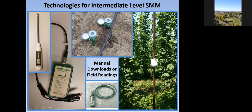Another common type is the Irrometer tensiometer. You fill these with fluid, put a vacuum on them with a vacuum pump, and bury them in the ground to the depth you want to monitor. If you want to look at a 12-inch root zone, you set the probe tip down at that 12-inch zone. As the soil dries out it pulls more of a vacuum; as it gets wet again, that vacuum relaxes. You can read the meter right on the side — it shows you the tension in the soil. These are tension-based sensors.